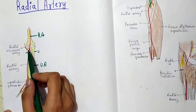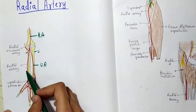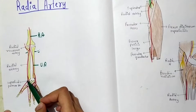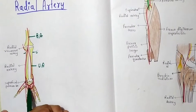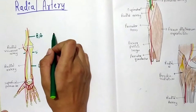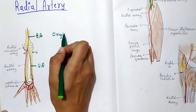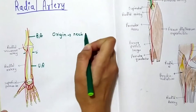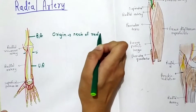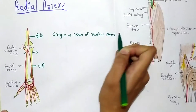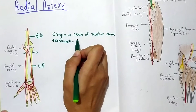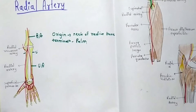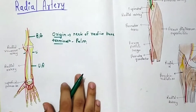The radial artery runs downward having a slightly lateral convexity, and running downward it winds posteriorly, entering the anatomical snuff box, and then participates in the deep and superficial palmar arches. The origin of the radial artery is at the neck of the radius bone, and the termination is in the palm, giving branches to the muscles and participating in the superficial and deep palmar arches.